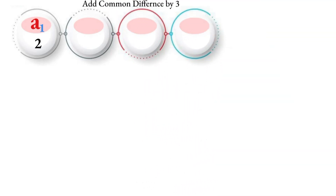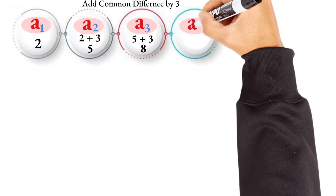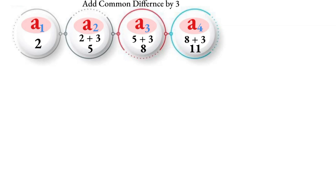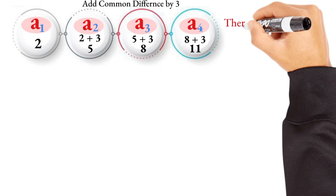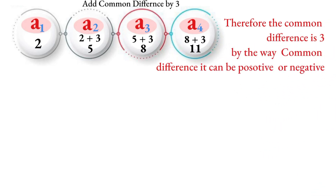For example, the second term is 5, the third term is 8, the fourth term is 11, and the fifth term is 14. The difference between successive terms is constant. The common difference is the difference between any term and its preceding term, and it can be a positive or negative number. So A1 is the first term, A2 is the second term.